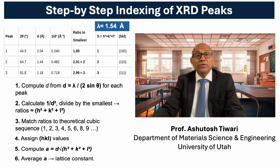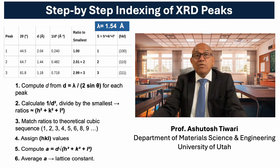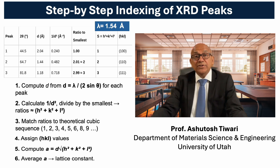In practice, the process of indexing x-ray diffraction peaks is quite straightforward. Here we look at the case of a cubic crystal, where the geometry provides a simple relationship between the spacing d and lattice constant a. This table lists three diffraction peaks observed at 44.5, 64.7, and 81.8 degrees. To index these peaks, we first calculate the d-values for each using Bragg's law, then calculate 1 divided by d squared for every reflection, and normalize the results by dividing each by the smallest value. The resulting ratios correspond to the quantity h squared plus k squared plus l squared, which is characteristic of a cubic lattice.